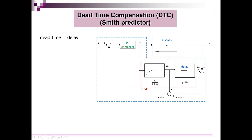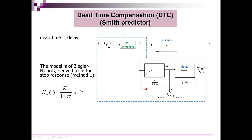So how does it look? We define the dead time as the delay time. Looking at this block diagram, we start with the process — this is the real hardware, the real system. It has a behavior like shown in this picture, and we model this behavior by a first order system with a transfer function kp over (1 + s·tau), and a delay whose transfer function equals e to the power of minus s times the delay time tauD. The parameters can be derived using the Ziegler-Nichols method number one. So we have a first order behavior and a delay, split up in the model.